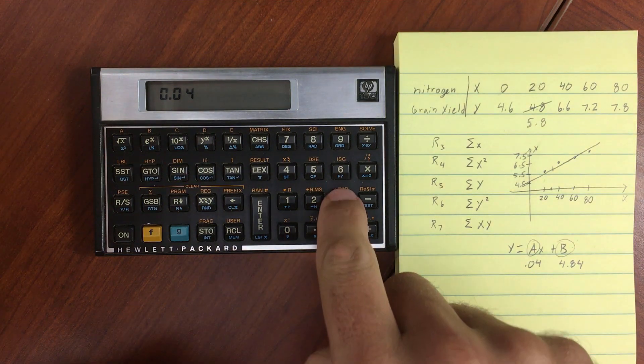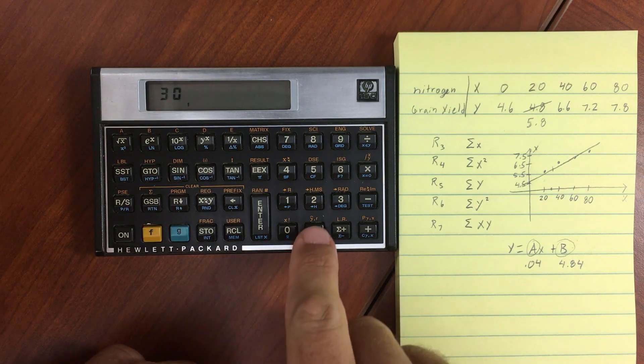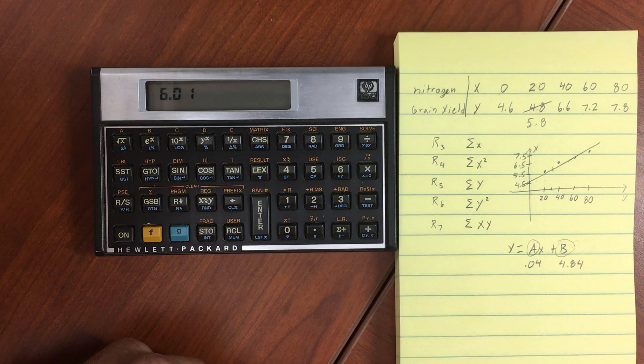If I enter in 30 into my X register and then hit Shift Y, that gives me 6.01 as the estimate for the Y value given the linear regression that we've done.